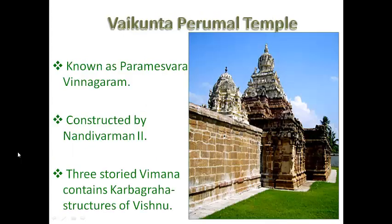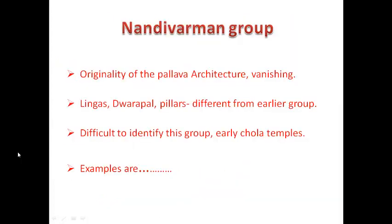The Vaikuntha Perumal Temple, otherwise known as Parameshvara Vinnagaram, was constructed by Nandivarman II. Each of the three stories of the Vimana contains a Garbhagraha with standing, sitting and sleeping sculptures of Vishnu. Among the structural temples, the Nandivarman group is the second group. The originality of Pallava architecture was slowly vanishing in this group. The lingas, Dvarapalakas, pillars etc. are different from the earlier group, and it is very difficult to distinguish this group from the early Chola temples.